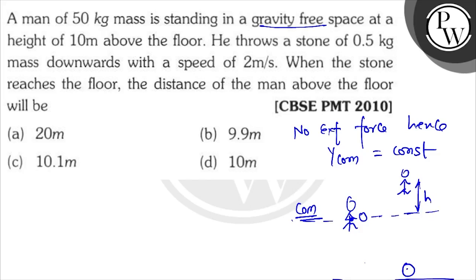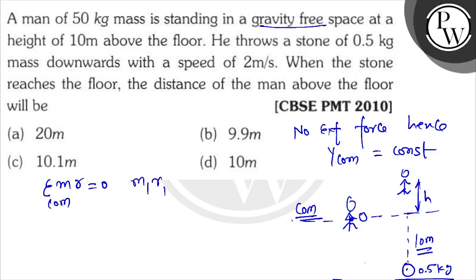This is your block of 0.5 kg, and that distance is 10 meters. As we know, the net moment about the center of mass is always zero. So we can say M1 × R1 = M2 × R2.